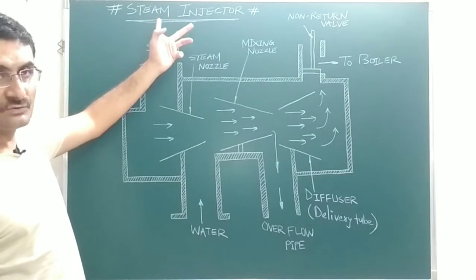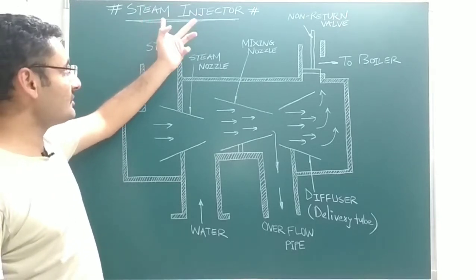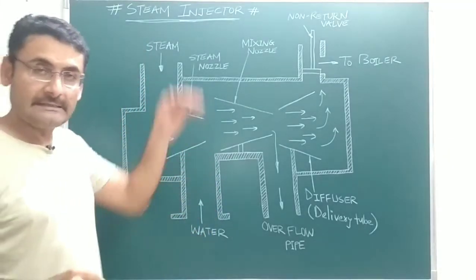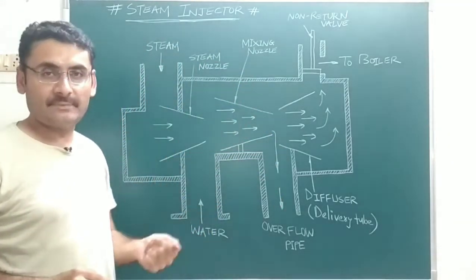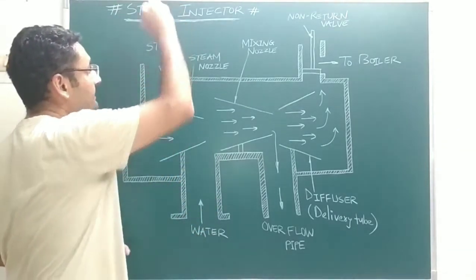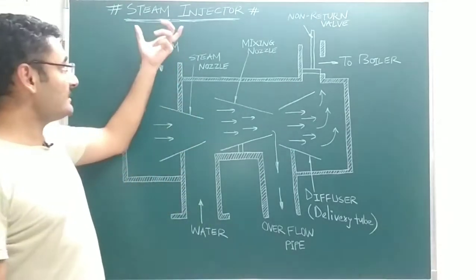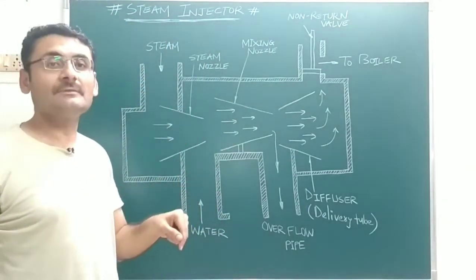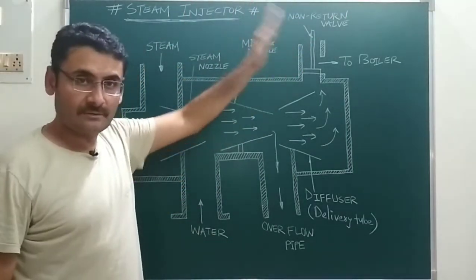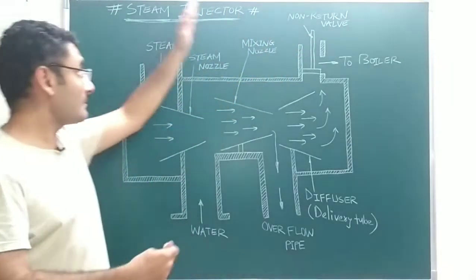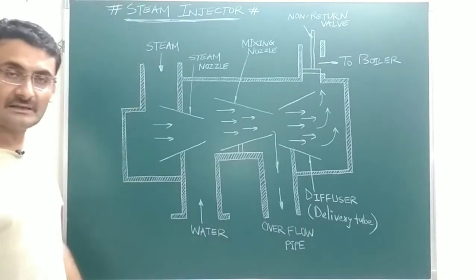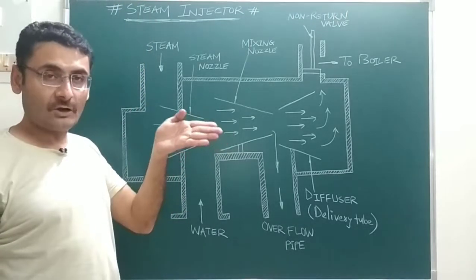A steam injector is a device which is used to inject water inside the boiler at high pressure by using the high-pressurized steam already present inside the boiler. The steam injector does not inject steam into the boiler — it injects water at high pressure using the steam already present.